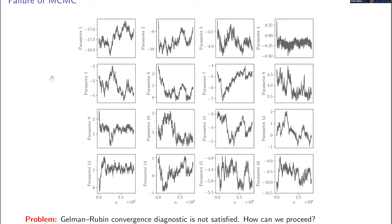There must be something we can do, because for each state the Markov chain visited, we know the value of the posterior density up to a normalization constant. We've actually learned a lot about the posterior. It's just that we can't literally take the ensemble of visited states as an approximate collection of samples from the posterior. There is information in this picture — it's just not readily retrievable for science yet. That's where our methodological contribution comes in: we're going to take something like what's on screen and try to draw meaningful conclusions about the posterior, irrespective of whether the Markov chain is mixed or not.